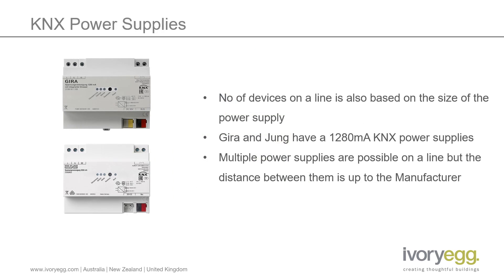Whilst this is a really big step forward and a major simplification for designing systems, the other limit on the number of devices on a line is the size of the power supply. Whilst we may be able to have 256 devices on a line, there aren't currently any power supplies that could deliver enough current, assuming the device average of 10mA each. Gera and Jung do have a 1280mA power supply, which potentially doubles the number of devices you could have over a standard 640mA power supply.